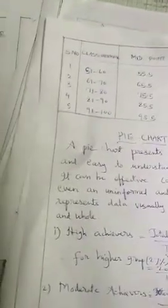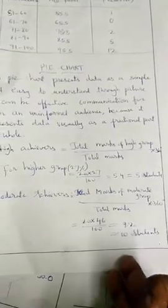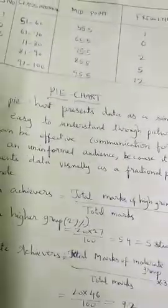Now the pie diagram. Categories: low achievers 27%, moderate 40%, high achievers (remaining percentage). The difficulty level: low is 27%, moderate is 40%. For the pie chart, convert percentages to angles by multiplying by 360 divided by 100, or proportional to total students.